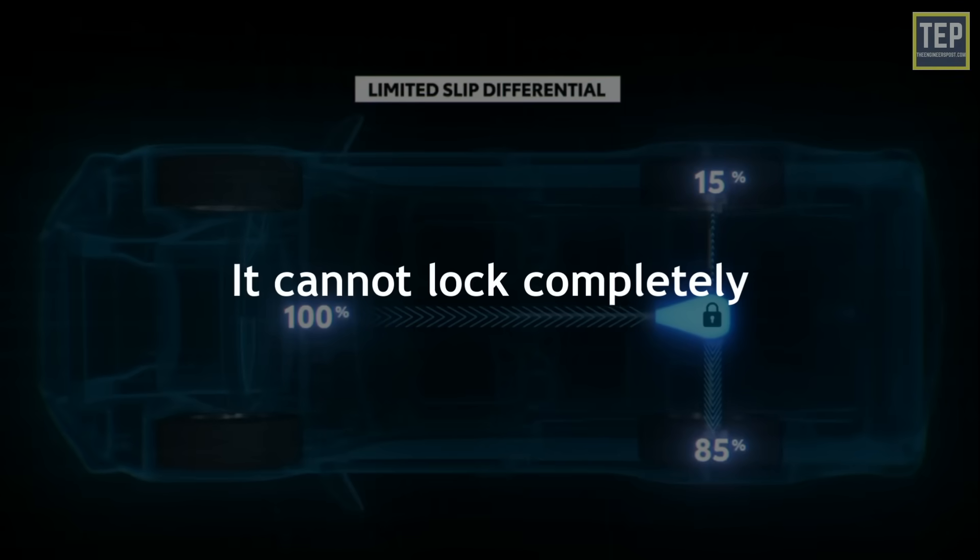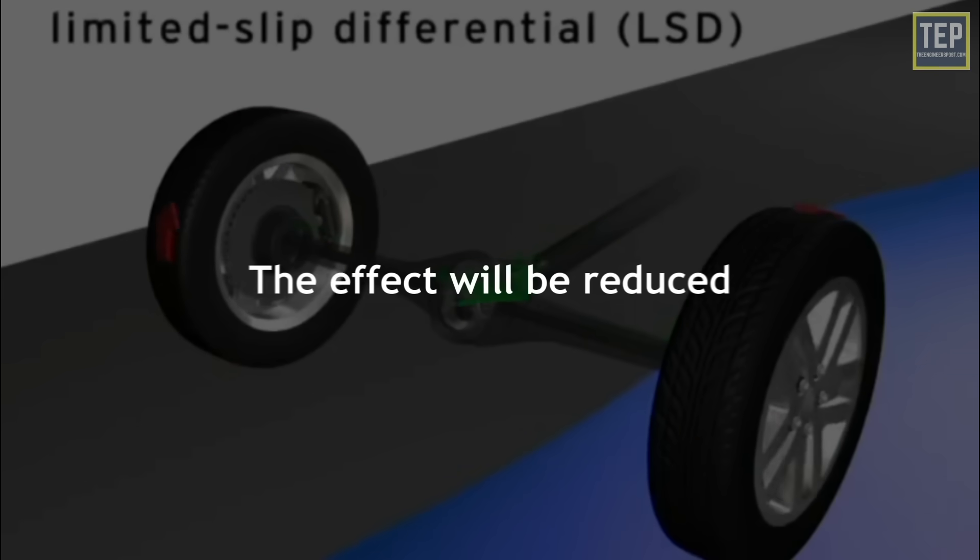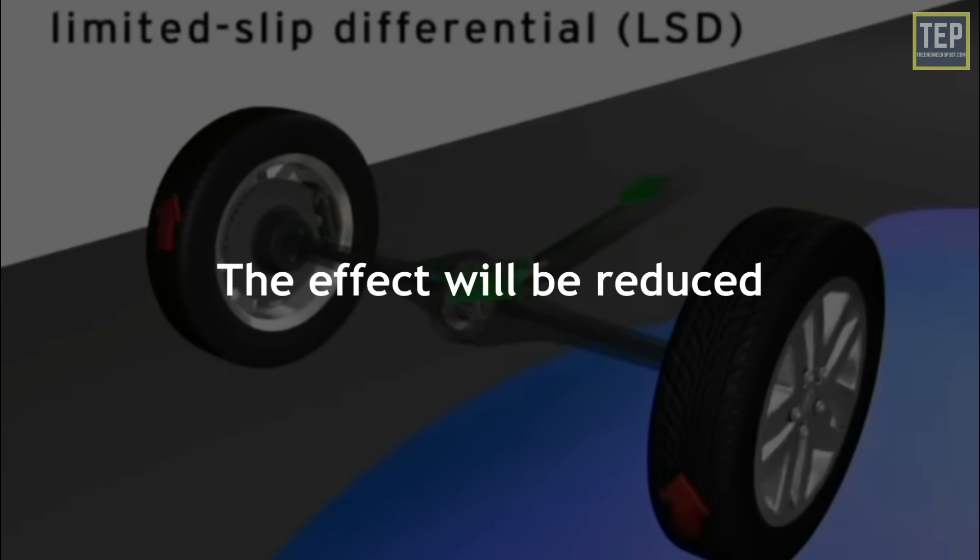It cannot lock completely because the system requires a speed difference between the two sides to transfer torque. When it is being used too often, the effect of limited slip differential will be reduced.